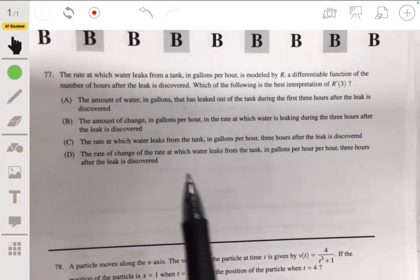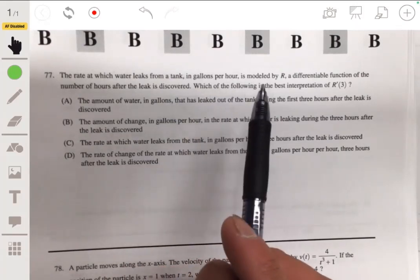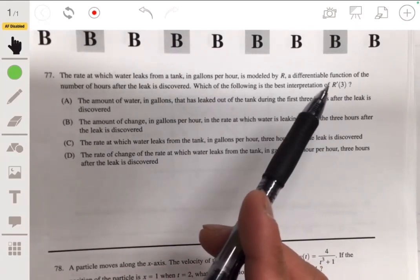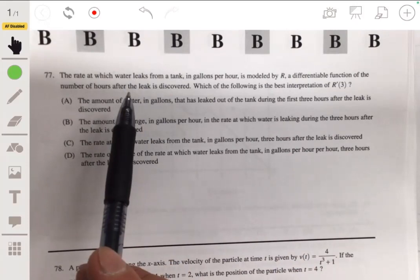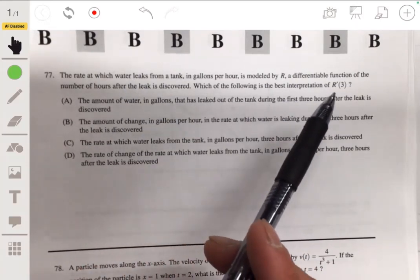Number 77. You've got that the rate at which water leaks from a tank in gallons per hour is modeled by r, which is a differentiable function of the number of hours after the leak is discovered. Which of the following is the best interpretation of r prime of three?